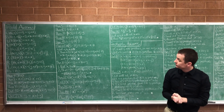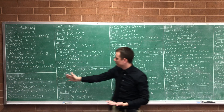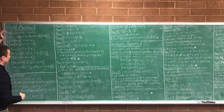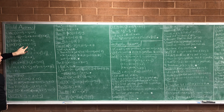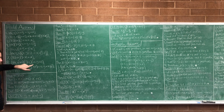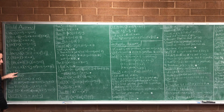Quick recap from last time. We start out with the field axioms. Addition is commutative. Addition is associative. There's an additive identity element. There's an additive inverse element. Multiplication is commutative. Multiplication is associative. There is a multiplicative identity element. For every x, there's a multiplicative inverse element, as long as that x wasn't zero. This is how we distribute. And finally, one is not equal to zero.